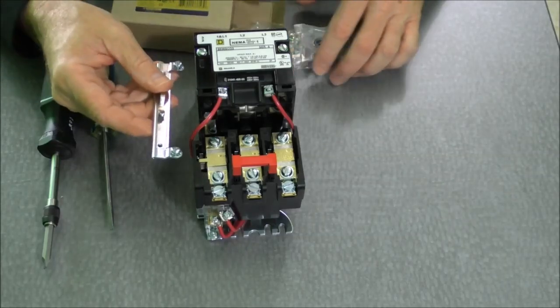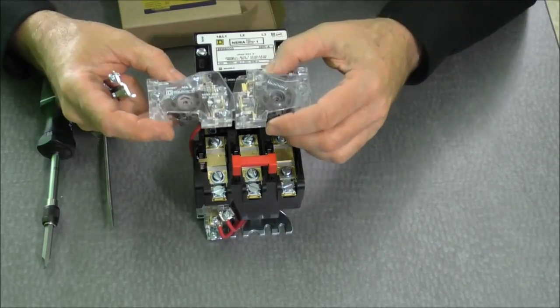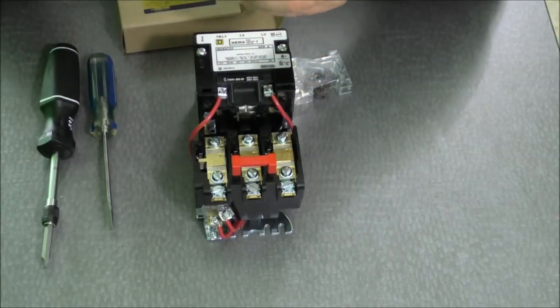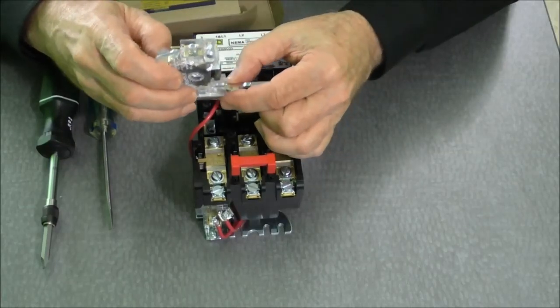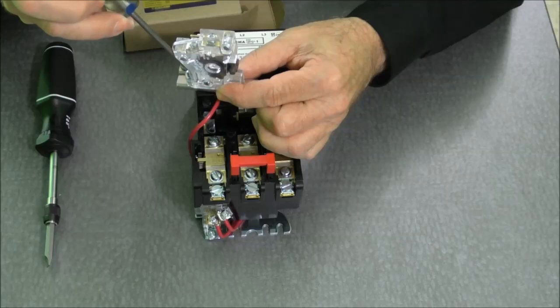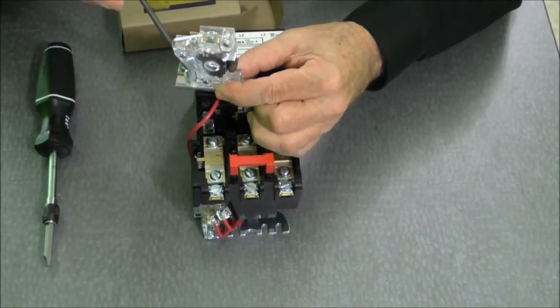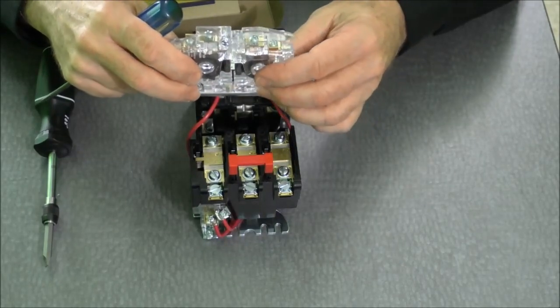So we have a mounting block. We have two auxiliary contacts. The first thing we'll want to do is mount the auxiliary contact block on the mounting plate. So we just slide it on. It's one screw that will hold it in place. We'll load the second one exactly in the same fashion.